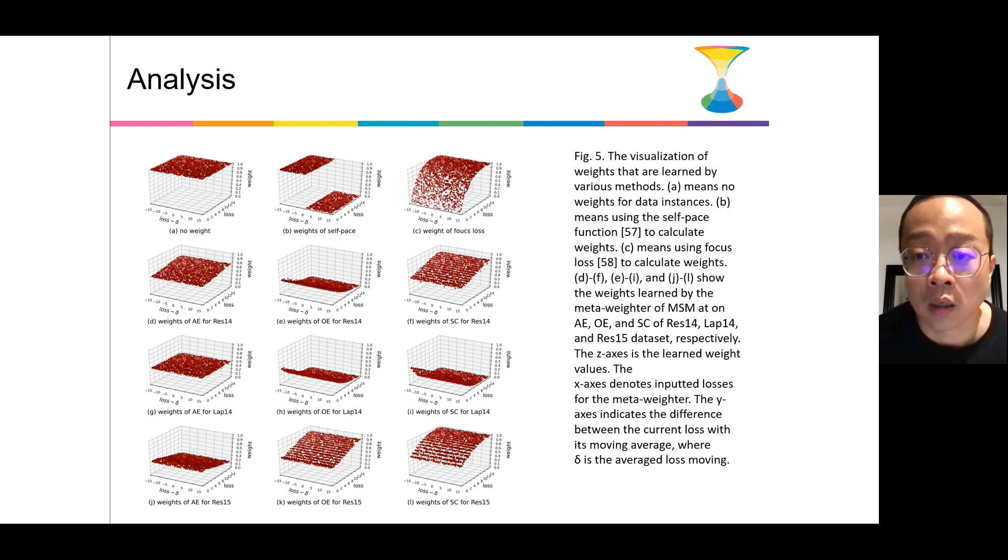And in the last, considering that our meta-weighter aims to automatically learn different weighting strategies under different conditions, we then compare them with three typical manual weighting methods. The results show how the meta-weighter can learn different weight distributions for different subtasks in different datasets. It will be more flexible compared with the methods which need to manually design different weight strategies for different tasks.